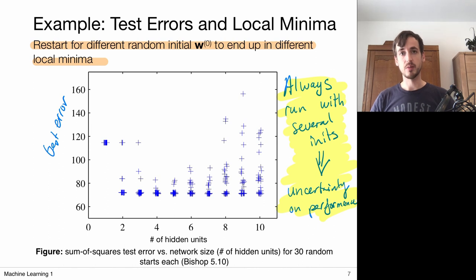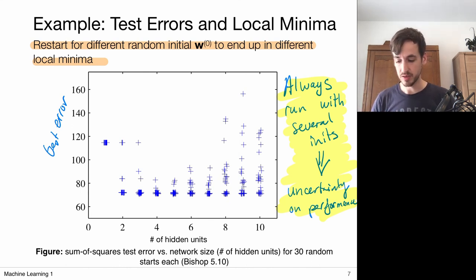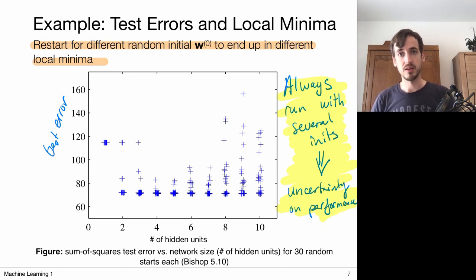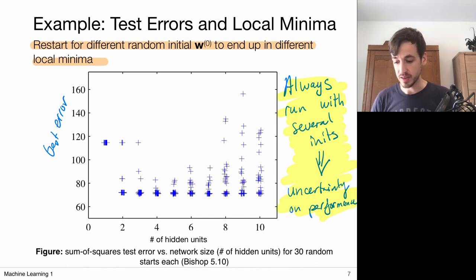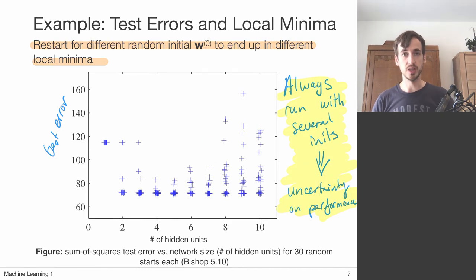That wraps it up for neural network optimization via stochastic gradient descent. Currently, stochastic gradient descent is really the method to optimize neural networks because it's simple and has properties that help escape local minima. But still, this is not a guarantee that you won't end up at a local minimum — in fact, you're very likely to end up at a local minimum. And that leads to the fact that you can also expect variability in your models.